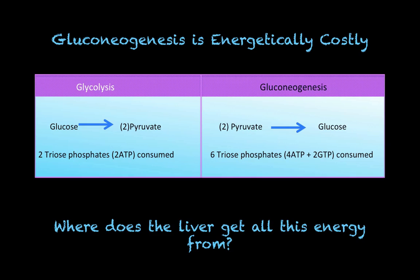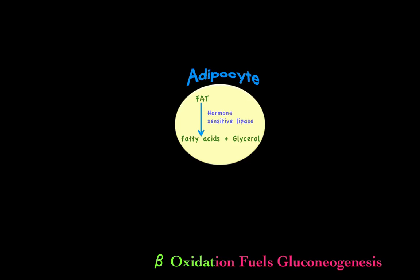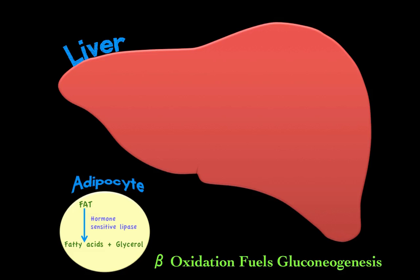So where does the liver get all this energy from? As mentioned in previous parts, the liver uses fat as an energy source. We have adipocytes — fat cells — that store triglycerides. When needed, a lipase called hormone-sensitive lipase hydrolyzes the ester bonds in the triglyceride to give rise to fatty acids and glycerol. Those fatty acids and glycerol enter the bloodstream and travel to the liver.